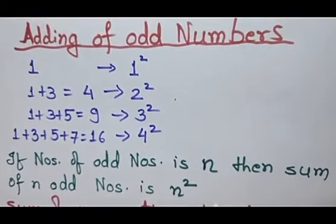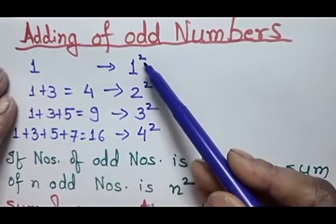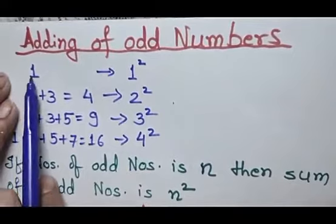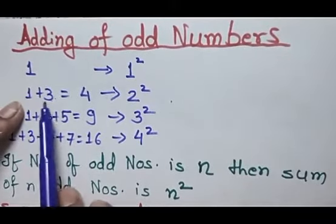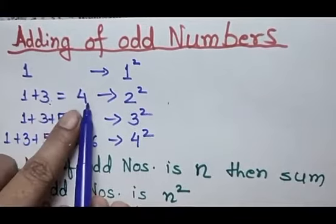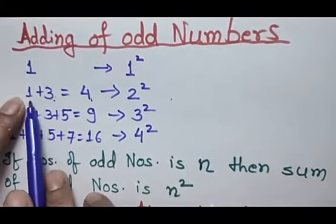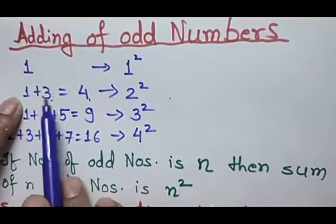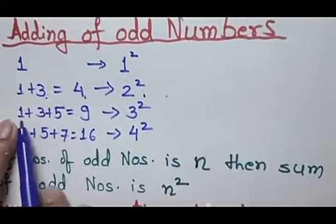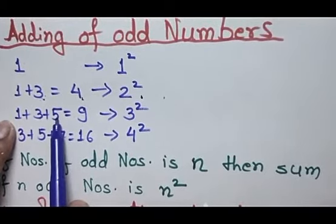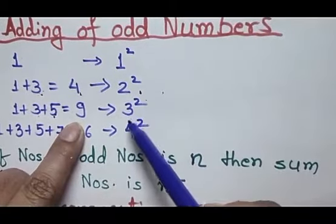Another property of square numbers is the addition of odd numbers. The square of any number can be represented as a sum of consecutive odd numbers. When we add 1 with 3, which are 2 consecutive odd numbers, we get 4, and 4 is the square of 2. If you add 3 consecutive odd numbers — 1, 3, and 5 — you get the sum 9, and 9 is the square of 3. Similarly, by adding 1, 3, 5, and 7, we get 16, and 16 is the square of 4.